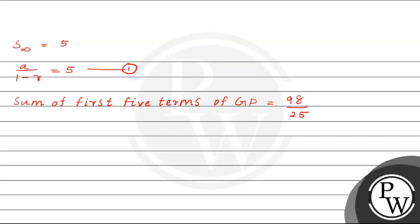So the sum of the first 5 terms is: S5 equals A times 1 minus R to the power 5, divided by 1 minus R, and this is equal to 98 divided by 25. Let's take this as equation number 2.